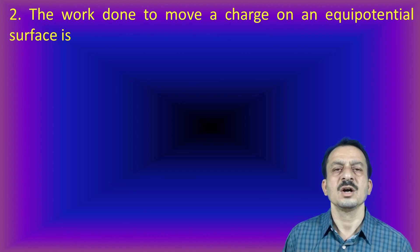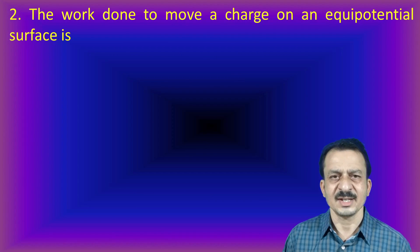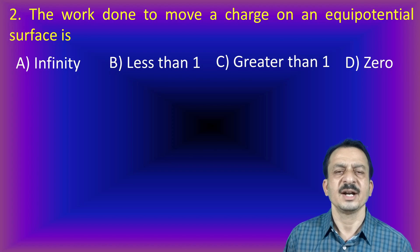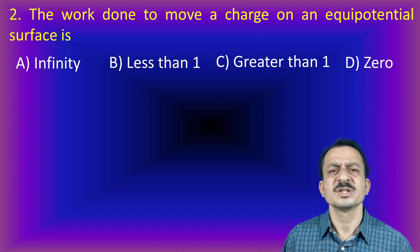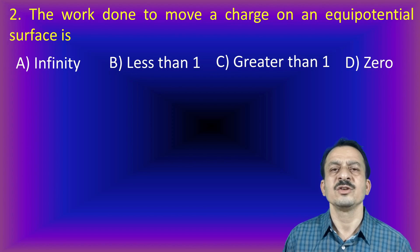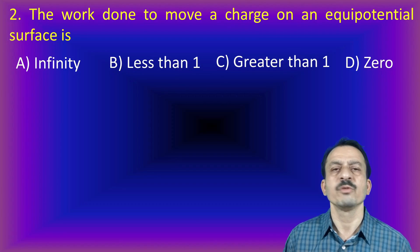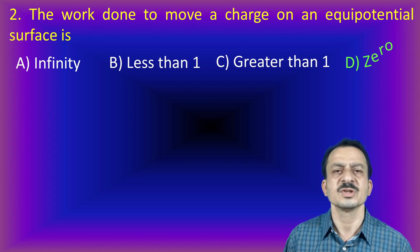Next problem: the work done to move a charge on an equipotential surface is — options: infinity, less than 1, greater than 1, or 0. By definition, an equipotential surface has a constant value of potential at all points. So any two different points have zero potential difference. Therefore, work done is obviously 0. The answer is D.